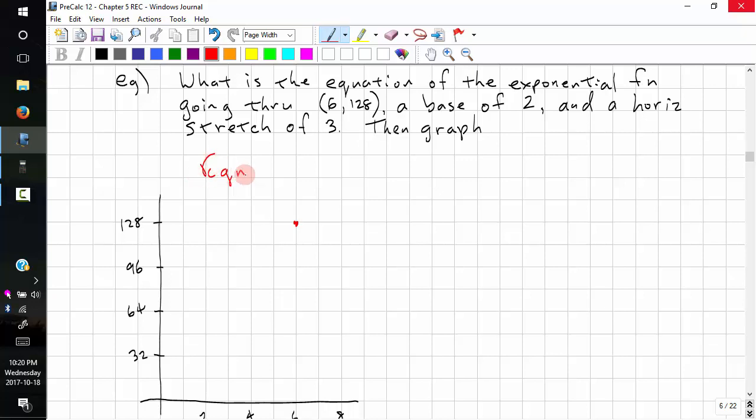So our equation, we have y equals 128, because this is yi, our specified value. And our base is 2. And we have a horizontal stretch of 3, so we have 1 third. And then t minus our specified value, which is 6. That's our specified point.